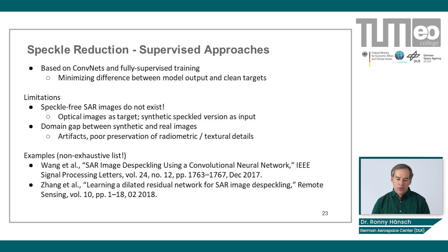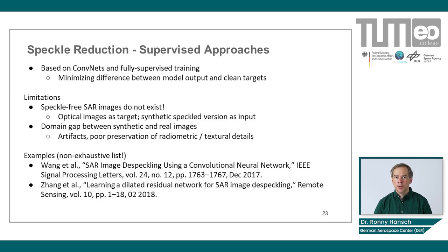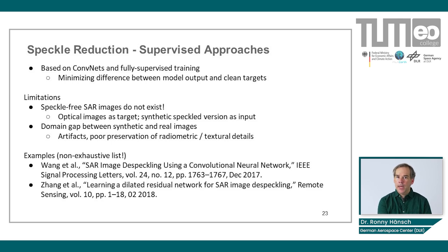There are a few ways to work around this. The easiest approach people started with was using optical images and adding artificial speckle. We can do that because speckle is a very well understood phenomenon. We have very good statistical models that, given the true intensity or amplitude of the SAR signal and the surrounding area, tell us how the speckle would look statistically. So we sample from those distributions to generate artificial speckle, add it to an optical image, and then we have an image with speckle and a speckle-free image. This lets us train the CNN with a speckled input and speckle-free output.